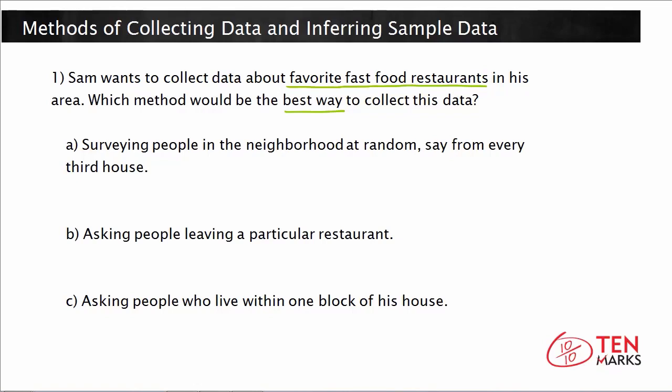Let's take a look at the different methods listed as A, B, and C, and we'll see if some are biased or unbiased and which one might be better than another. The first one says that Sam is going to survey people in the neighborhood at random, say from every third house.